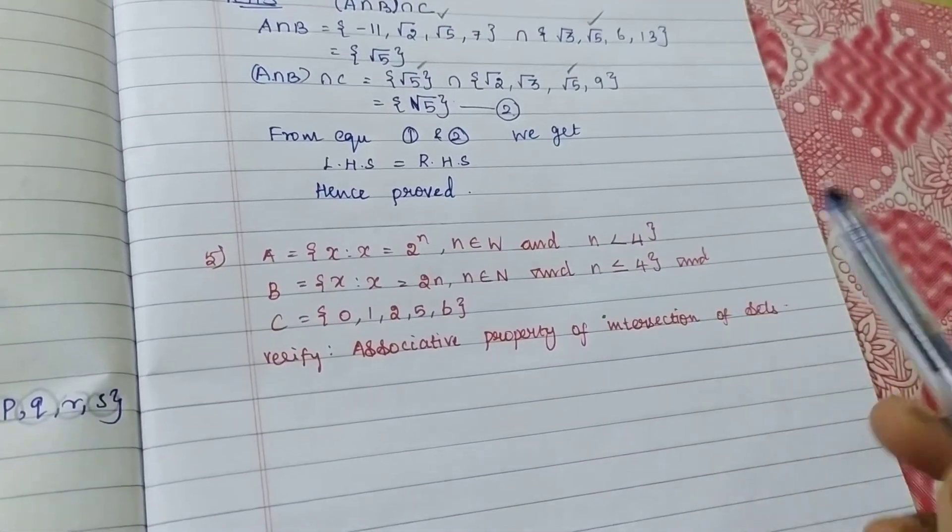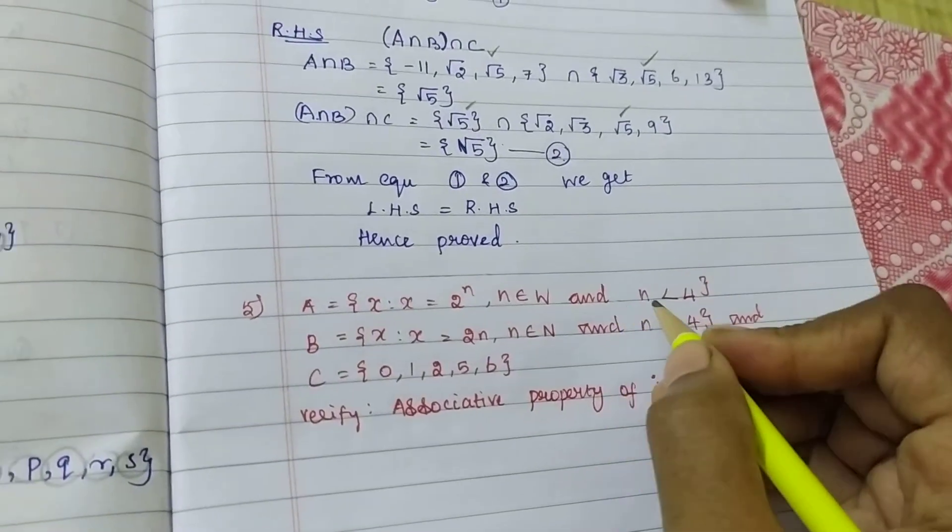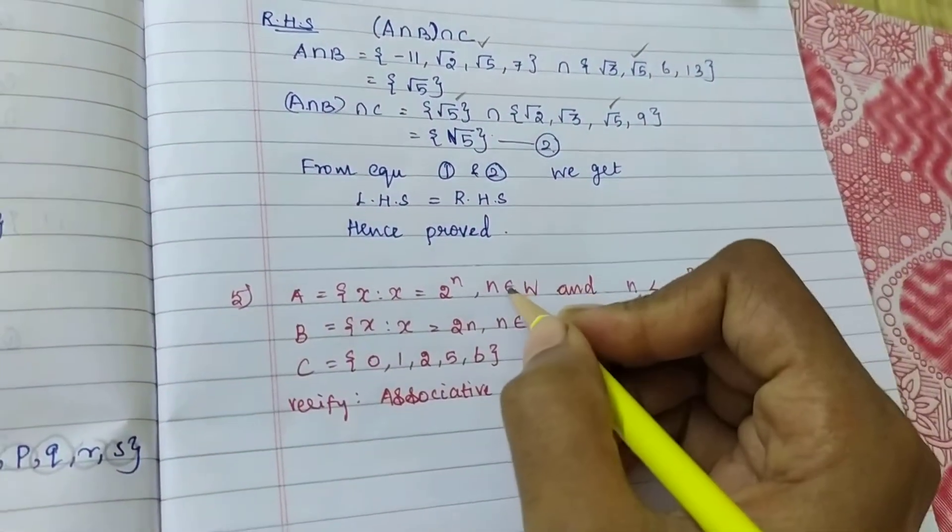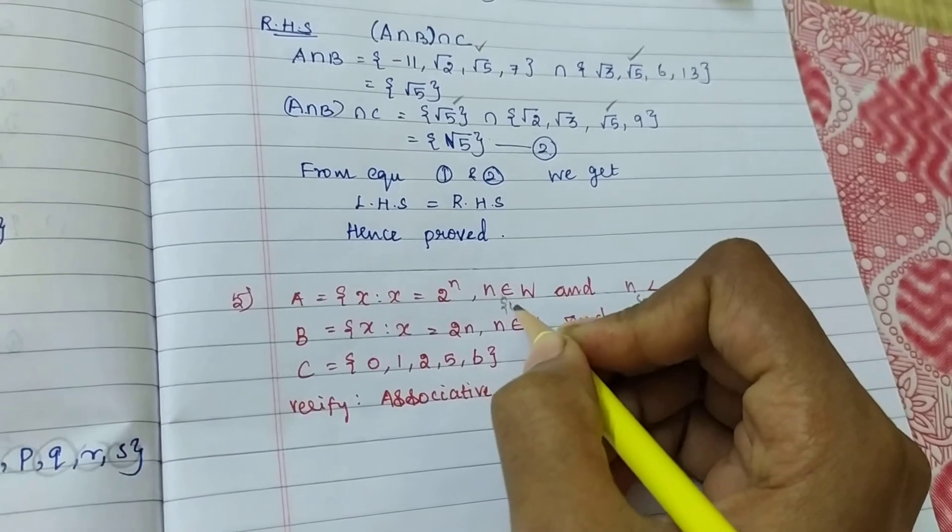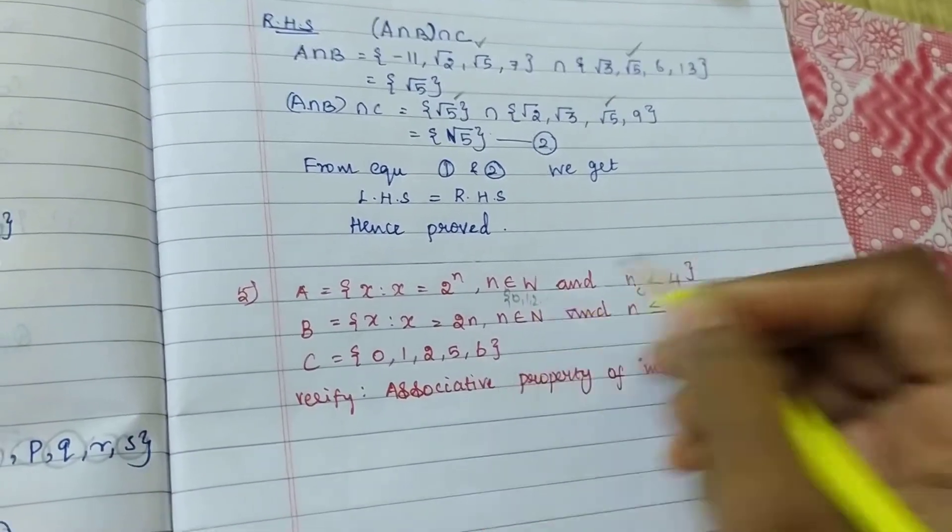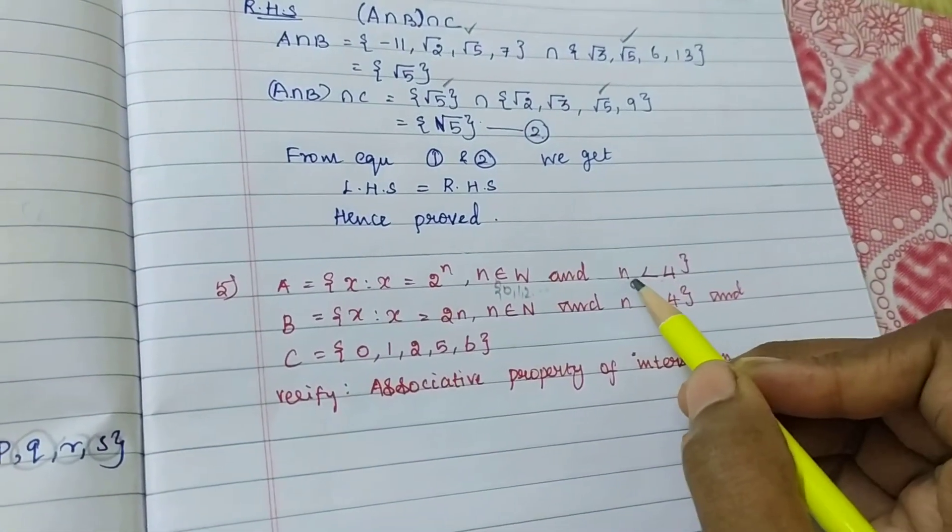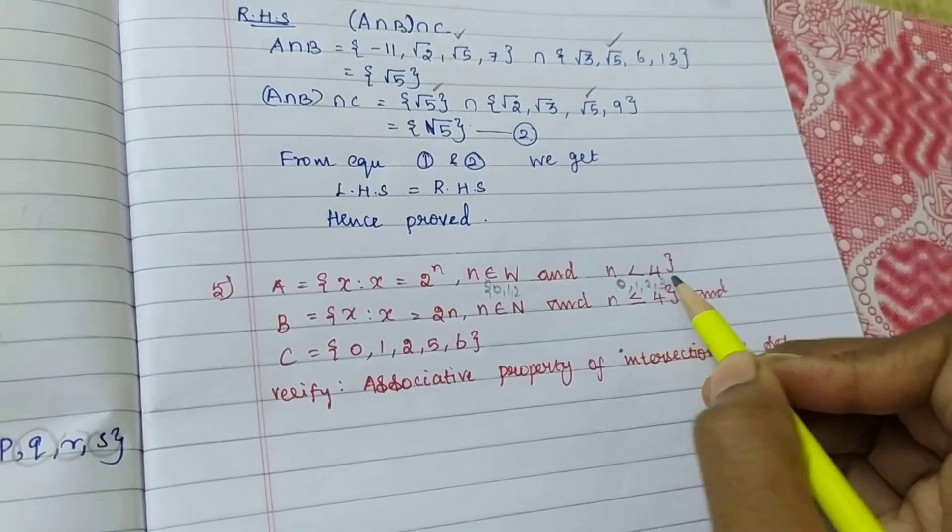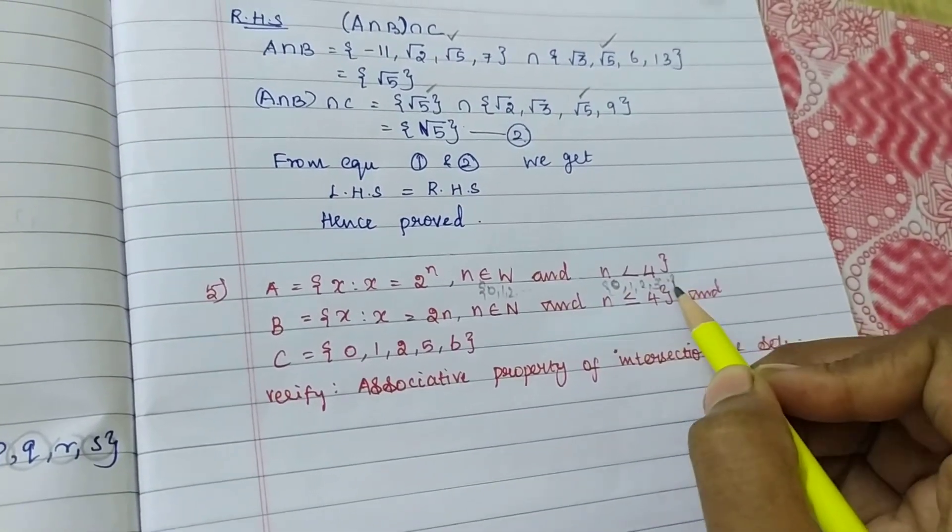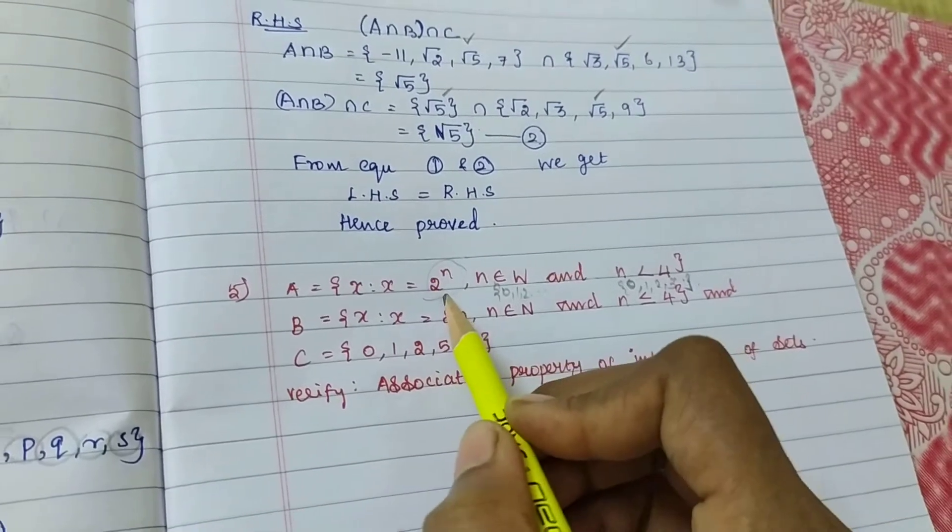So N is less than 4 means I can write, because my N is a whole number, so 0, 1, 2, etc. So my N is less than means 0, 1, 2, 3. This is my N value. So I am substituting my N value to get the answer.